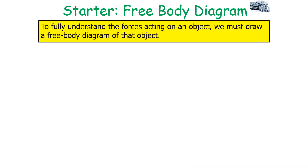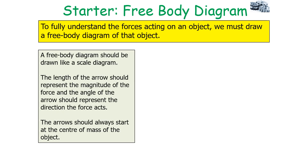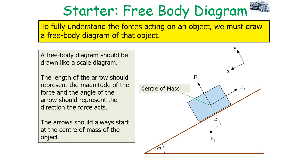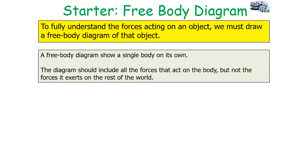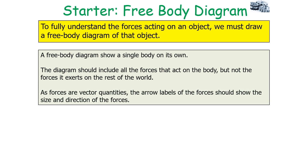To fully understand the forces acting on an object, we must draw a free body diagram. A free body diagram should be drawn like a scale diagram — the length of the arrow represents the magnitude of the force and the angle represents the direction. Arrows should always start at the centre of mass. The diagram shows a single body on its own, including all forces acting on it but not the forces it exerts on the rest of the world.